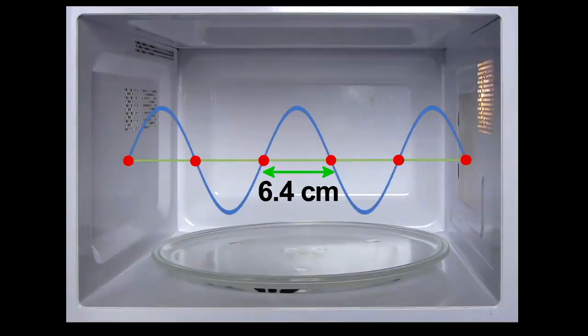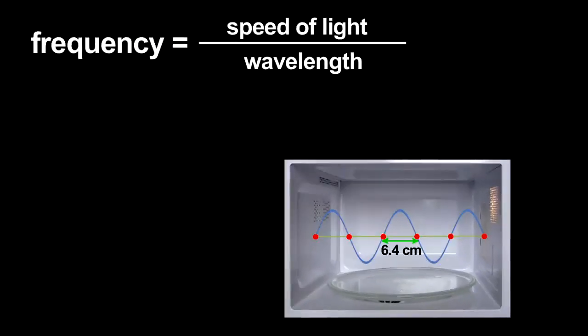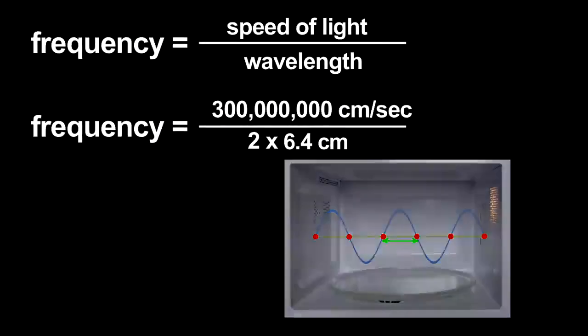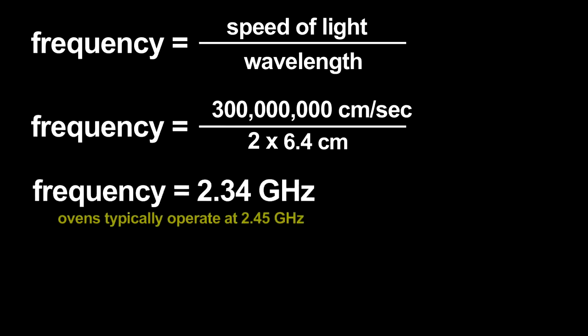Using that wavelength, I can estimate the microwave radiation's frequency. The frequency is related to the wavelength by the speed of light. I get an answer that only has a 4 or 5 percent error. Not bad for this primitive measurement.